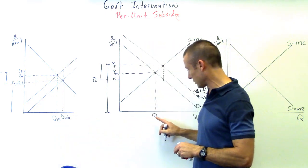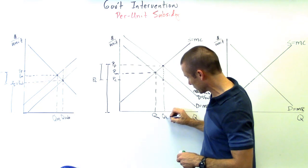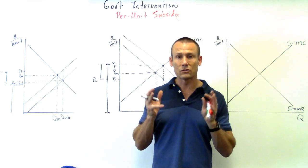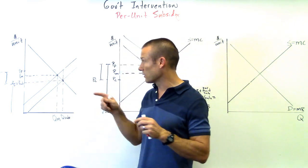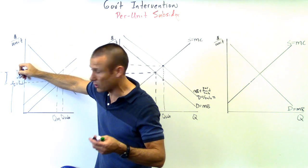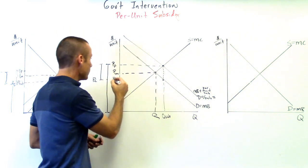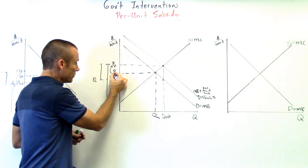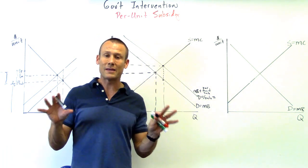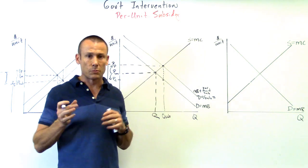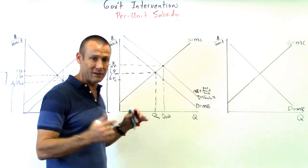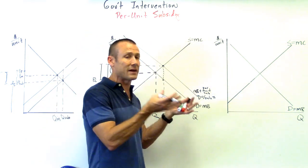Looking at both graphs, they're giving the same result. It doesn't matter who we actually give the subsidy to — the benefit is absolutely being shared. Producer per unit revenue goes up and consumer per unit cost goes down in both cases. That's why many teachers just say to use a subsidy wedge, because you'll get PP and PC in the right place with everything you need.